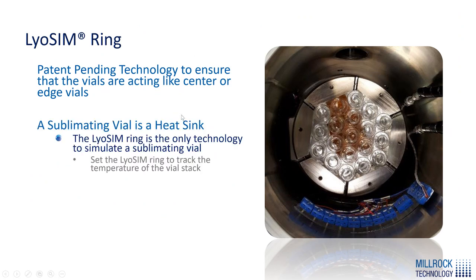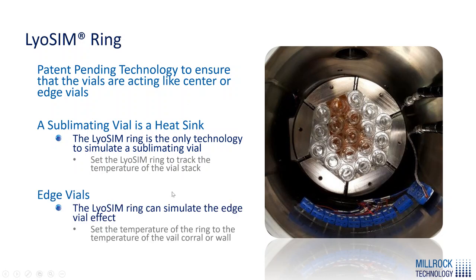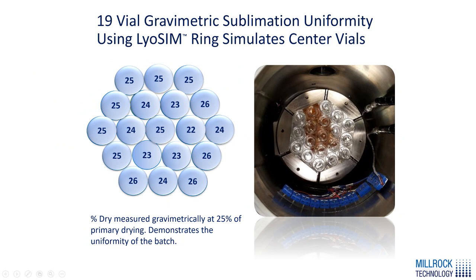The LiOSIM ring can simulate either center vials or edge vials. If we run the LiOSIM ring tracking the product temperature, we simulate center vials. If we run it above the product temperature to look like the corral that would normally be there, we simulate edge vials — a very powerful tool. When simulating center vials, we get a very uniform distribution across the batch, almost exactly what you would get for center vials in any batch. Center vials are all vials except for the outer two to three rows, which run at a higher sublimation rate. This gives us the ability to simulate 95–98% of the vials that are center vials.